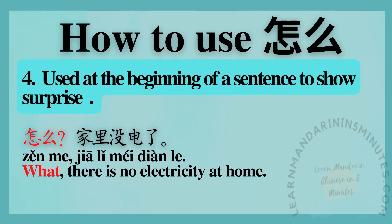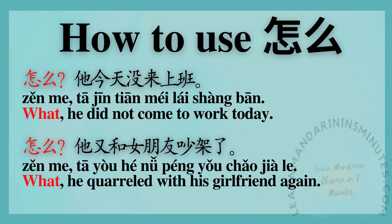Number 4: used at the beginning of a sentence to show surprise. Sentence examples. 怎么家里没电了。 — What? There is no electricity at home. 怎么,他今天没来上班? — What? He did not come to work today.